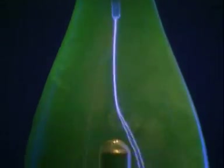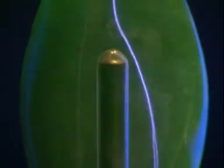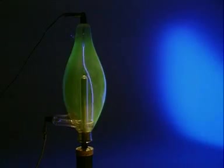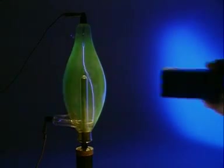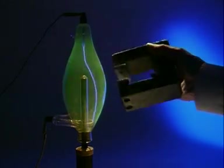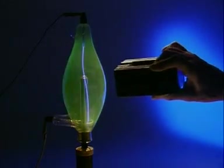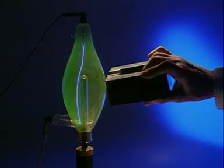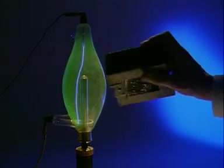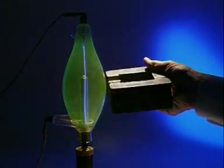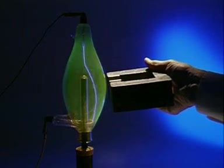This electric arc is also a stream of electrons. See what happens when a magnet is placed nearby. Because electrons are charged, their path can be deflected by a magnetic field. The same would happen with beta radiation.